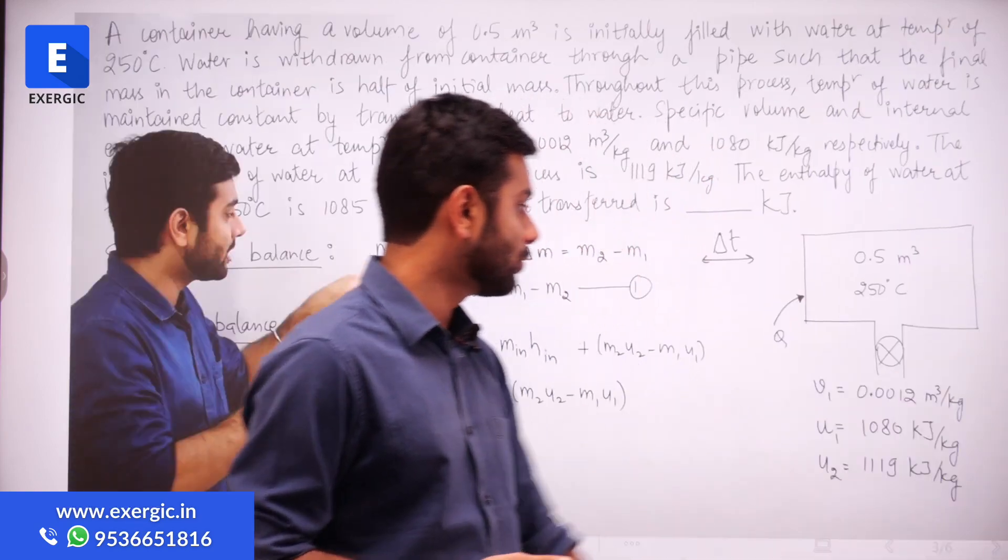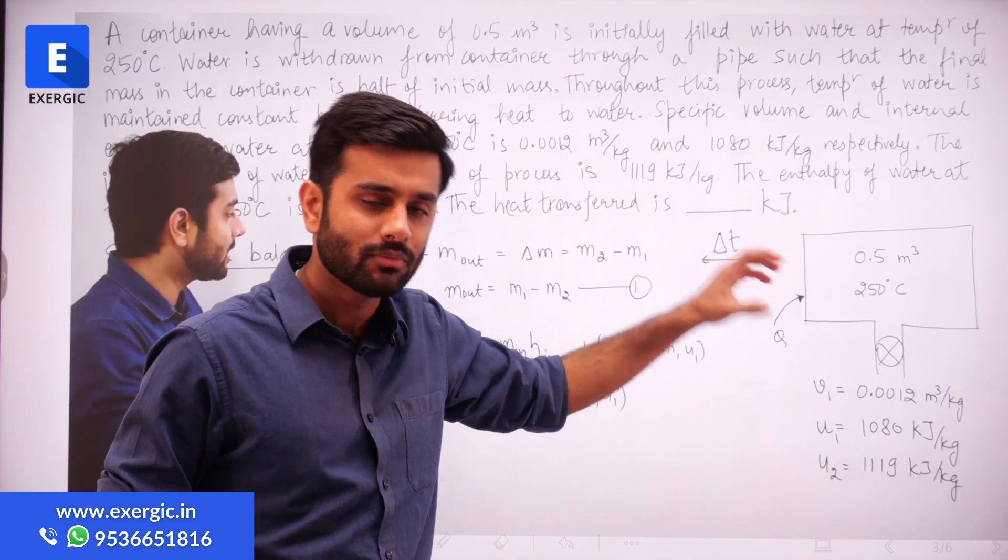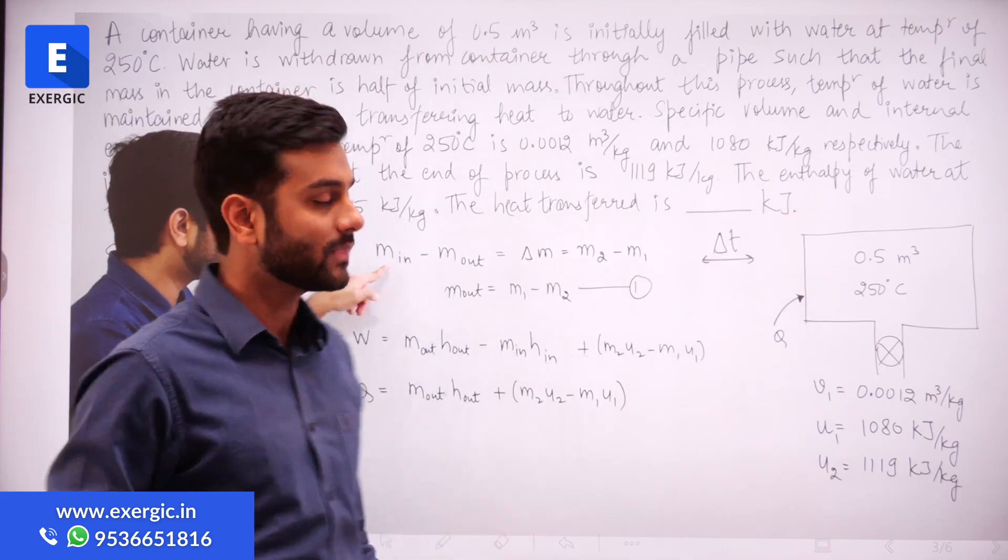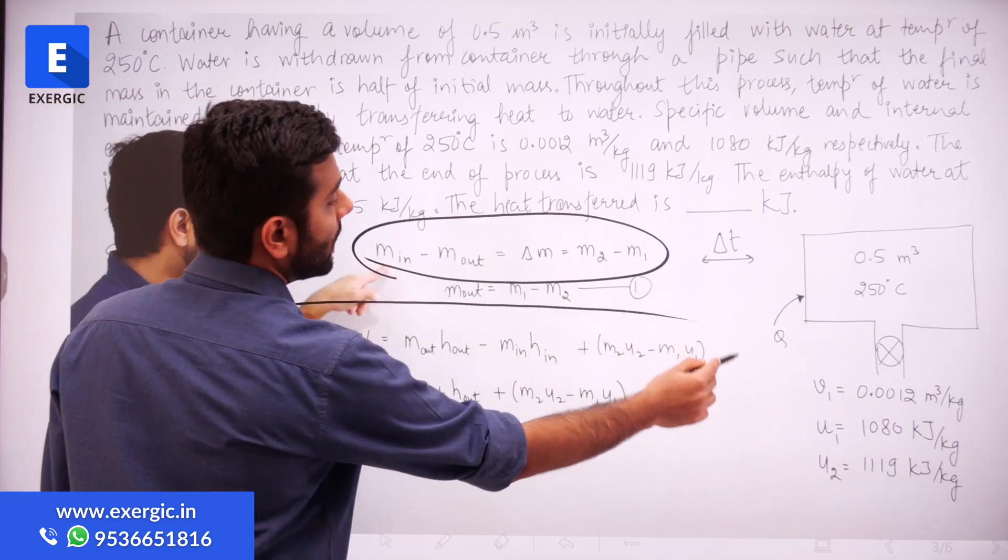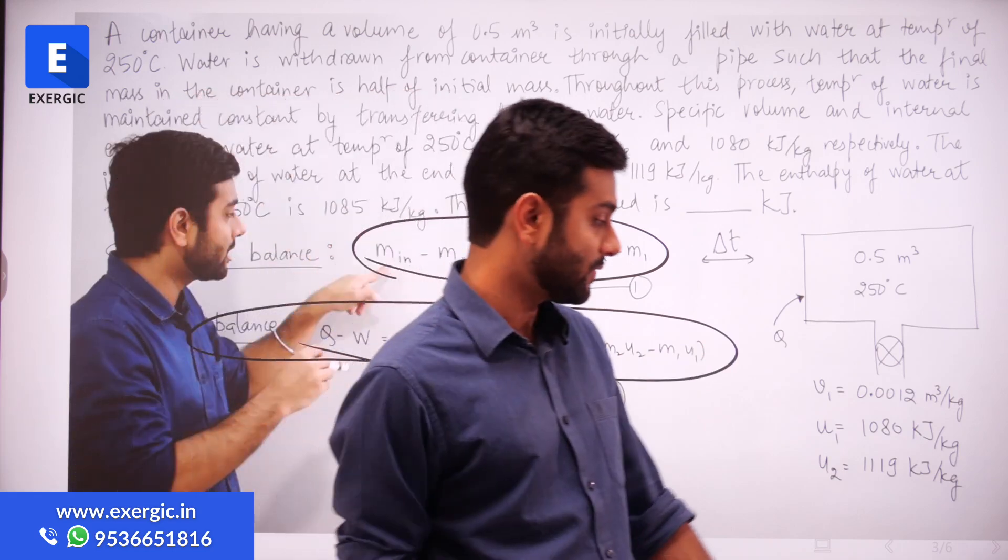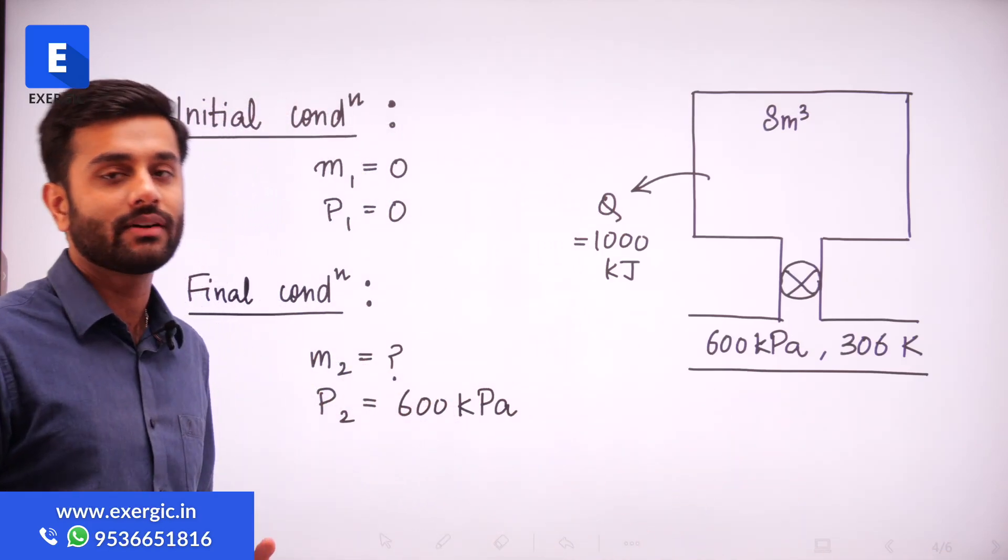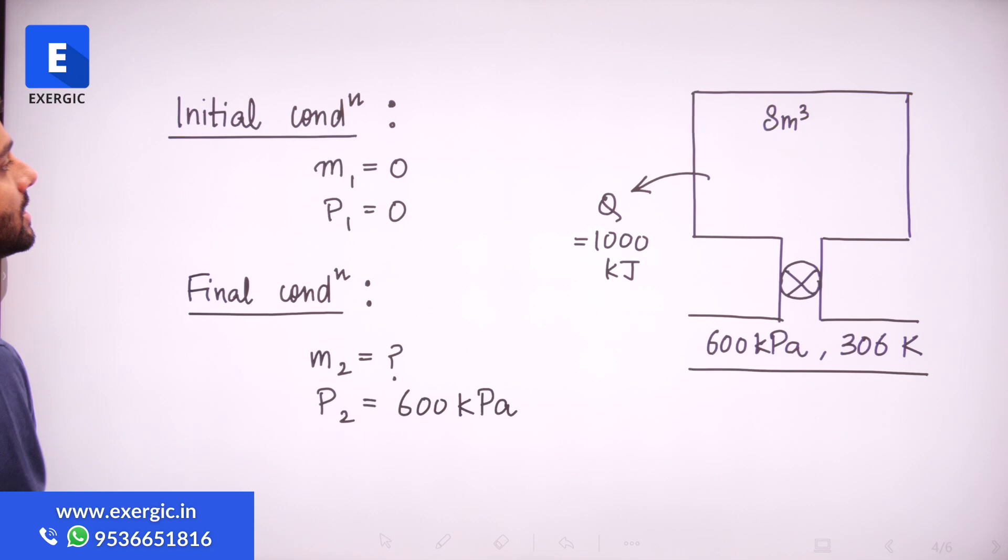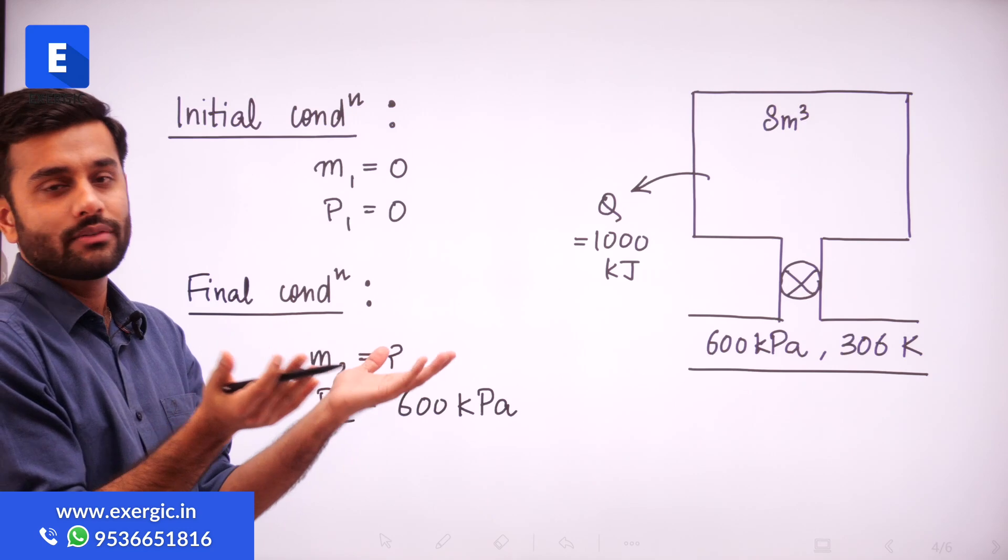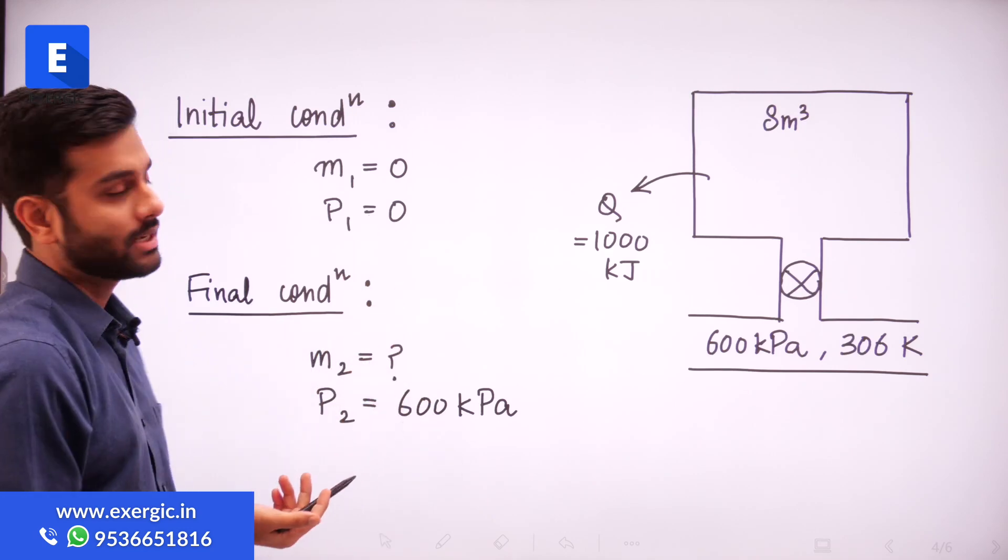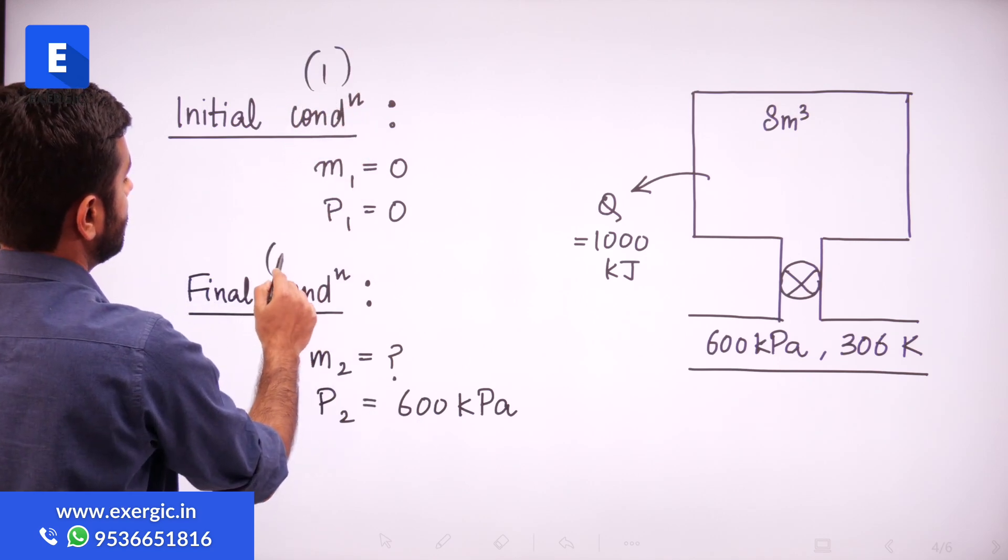Rather, what process you have to follow? As I told you, we have already discussed that in a separate question, but very similar, 90% similar. Mass balance we applied first and then we applied the energy balance. Exact same process we are going to follow in this question. But firstly, let us write what are the initial and final condition. So initial condition is that in this tank, mass is zero since it is evacuated and obviously if it is evacuated, pressure is also zero. So initial condition is represented by 1. And final condition is represented by 2. Final condition, what will be the mass? We don't know yet, but we know that at final condition, pressure will be 600 kPa.